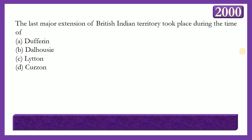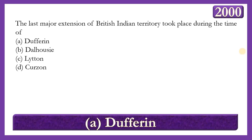Next question: The last major extension of British Indian territory took place during the time of which Governor-General? Options: Dufferin, Dalhousie, Lytton, or Curzon. The answer is option A — Dufferin — as the last major extension was the annexation of Upper Burma in January 1886, during his tenure.